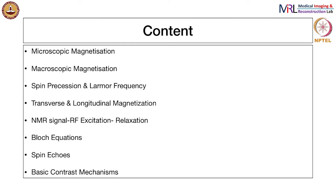Here is the outline. We are going to look at a brief introduction to the origin of magnetization in the sample. We will understand how the individual spins interact with the external static magnetic field. We will understand terminologies related to transverse and longitudinal magnetization. And then we will look at the origin of the MR signal that is used for putting together the images from an MR scanner.